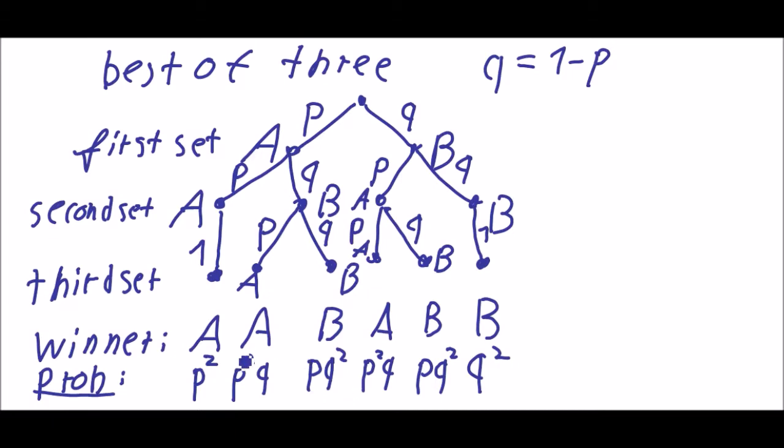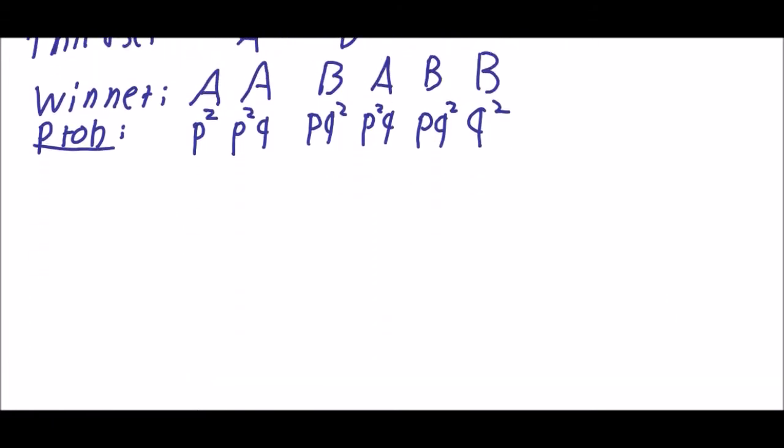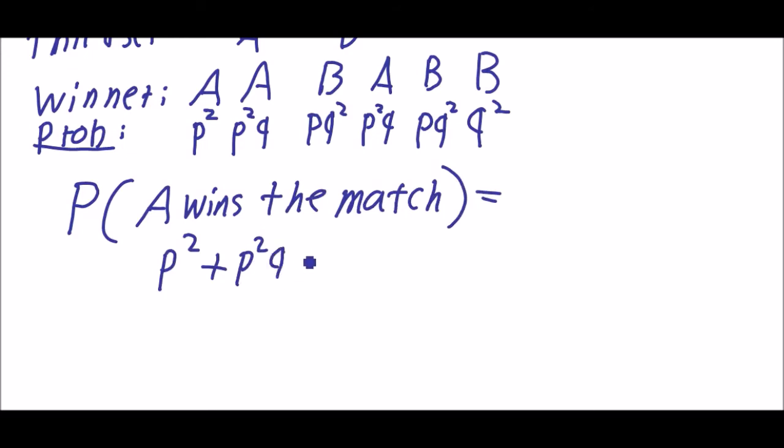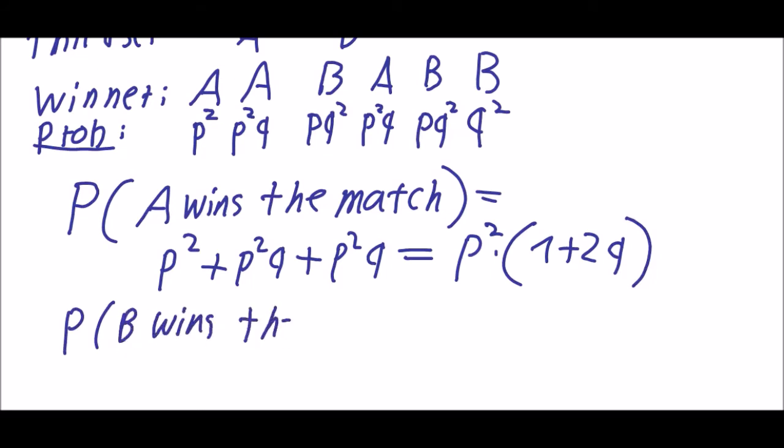So these are the probabilities for all cases and now we just have to add them up for player A and for player B and then we will get the probability of winning the match. So I will just write it down here. The probability of the event that A wins the match is P squared plus P squared Q plus P squared Q which is of course P squared times (1 plus 2Q).